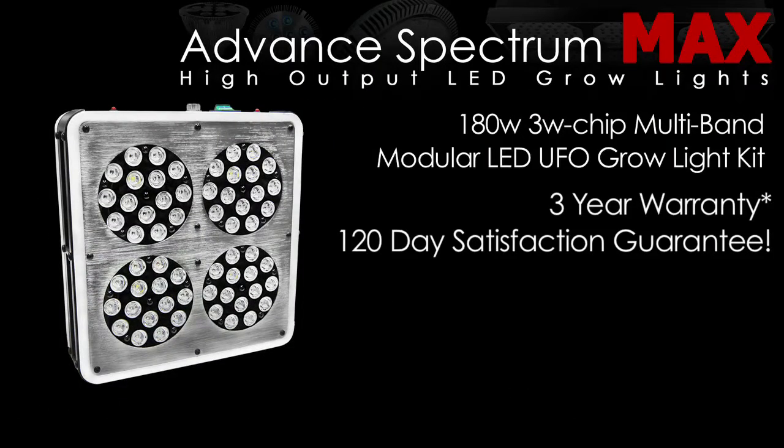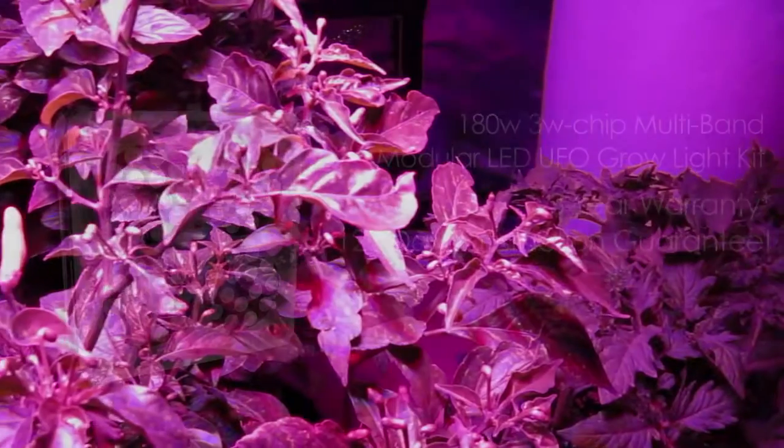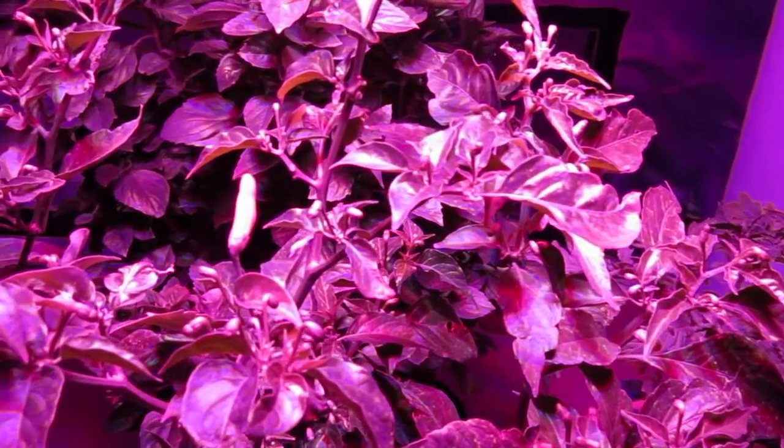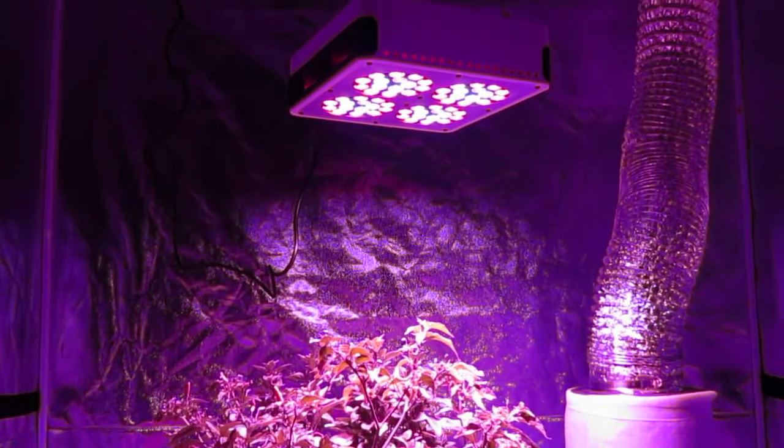The 180-watt Advanced Spectrum Max Modular Series LED Grow Light is the perfect light for vegging and flowering your favorite plants, offering a total coverage of 4 feet by 4 feet.